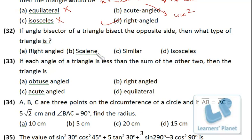The angle bisector of a triangle bisects the opposite side. Then what type of triangle is it? So it is pretty simple. Angle bisector bisects opposite side. That means the triangle has to be isosceles.